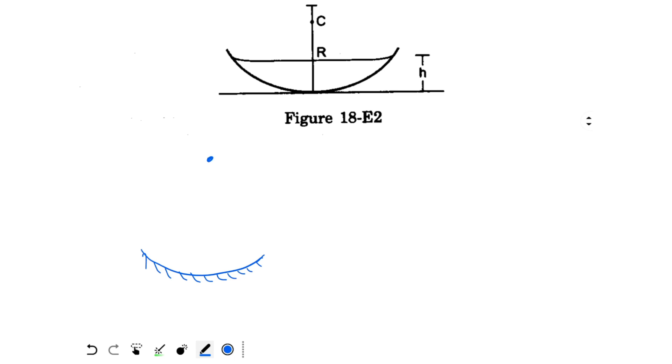For the concave mirror, if the object is kept at the radius of curvature, at the center of curvature, then the image is formed at the same point. Object and image are formed at the same point.